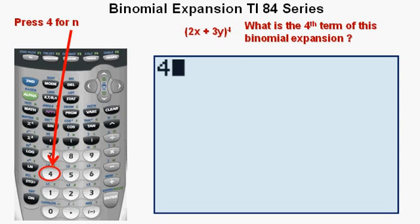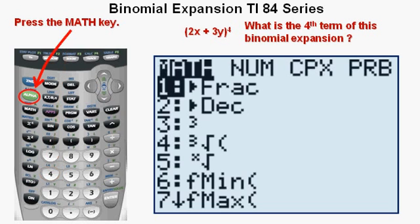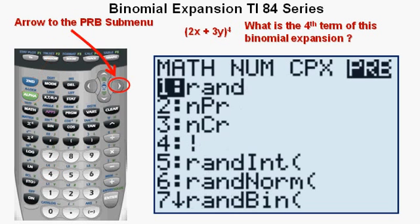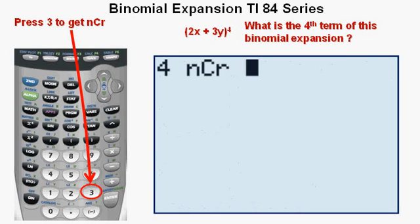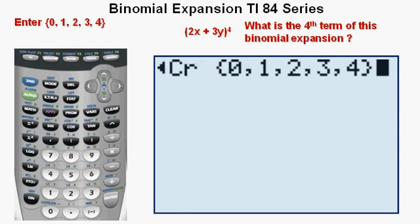First, enter the value of N, which is 4. Press the math key. Arrow to the right to the PRB for probability submenu. Press 3 to get to the N choose R or NCR option.